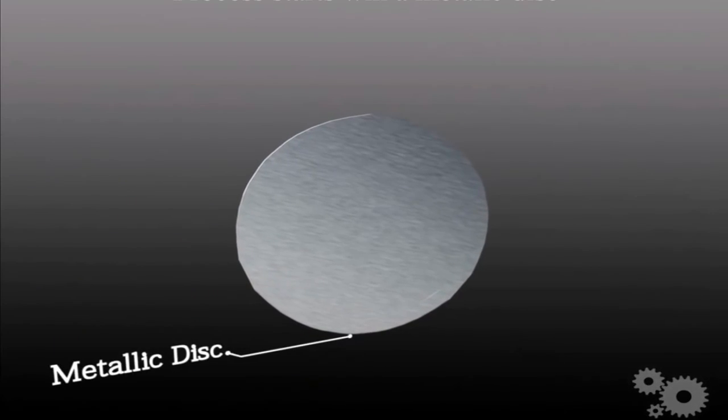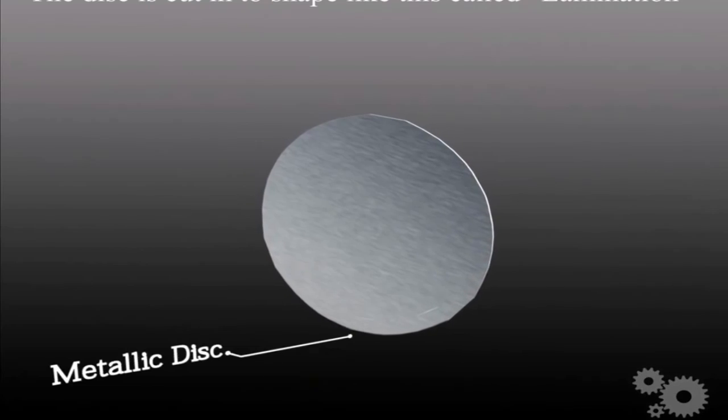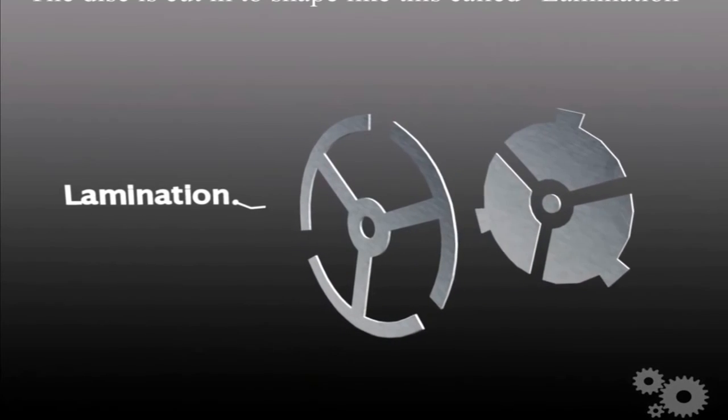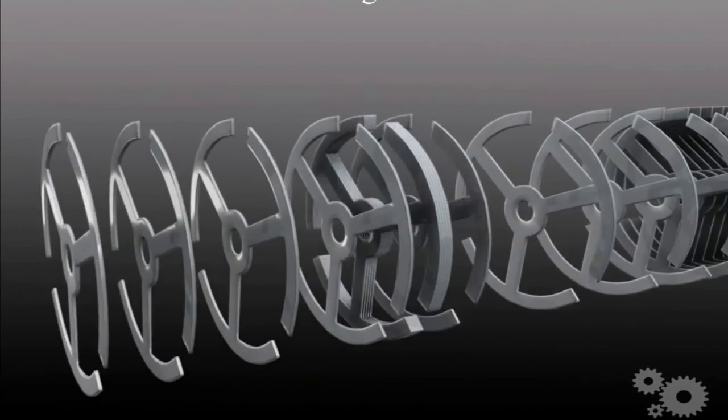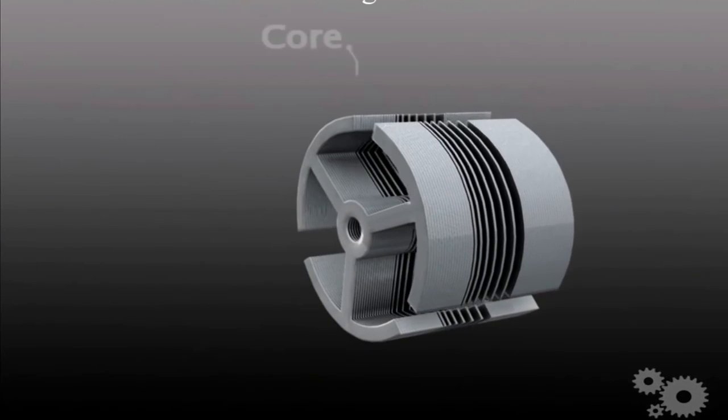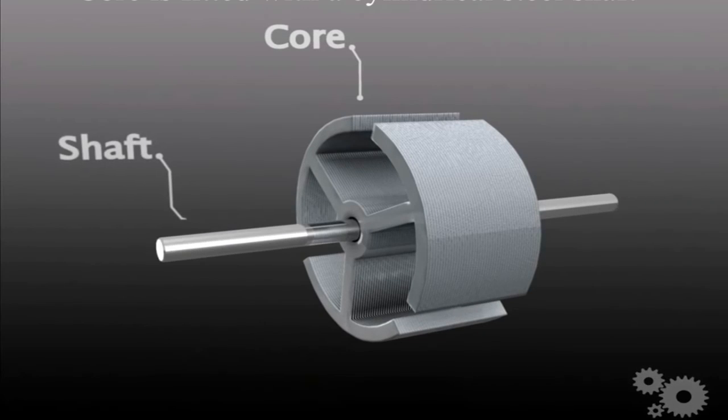Construction process of a DC motor starts with a metallic disk. We cut this disk into shape like this called lamination. These laminations are collected together to form the rotor core. The core is fitted with a cylindrical steel shaft.